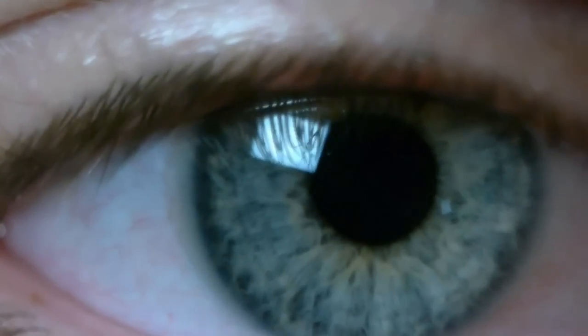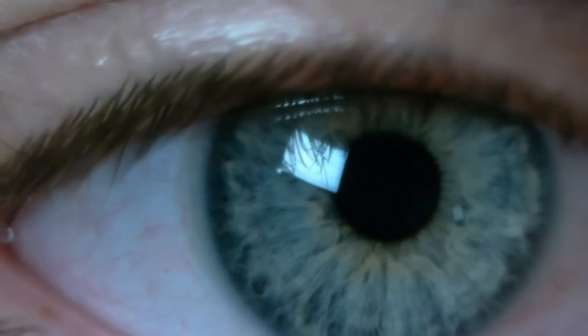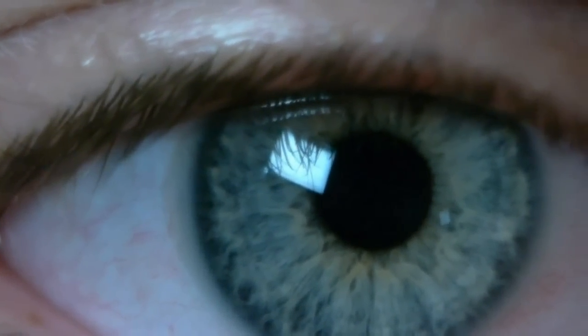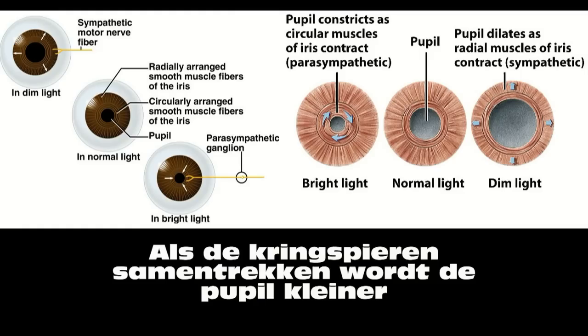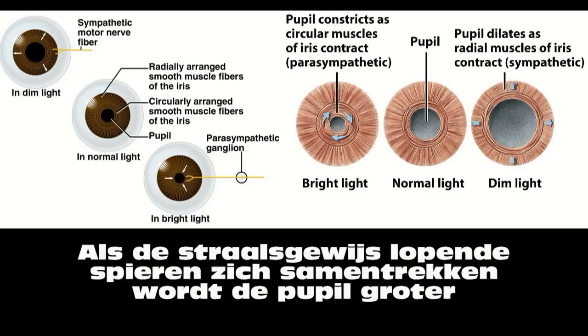The other major parts of the iris are the dilator muscle and the sphincter muscle. They work in conjunction together to either constrict or expand the pupil, allowing more or less light in. And lastly, here's a closer look at the fibers that make up the stroma.